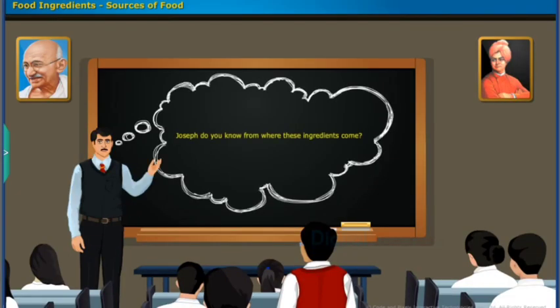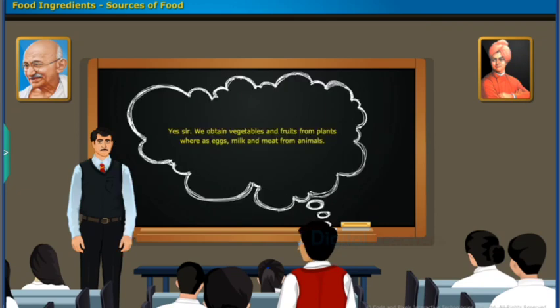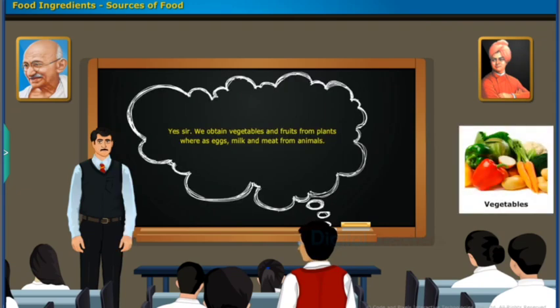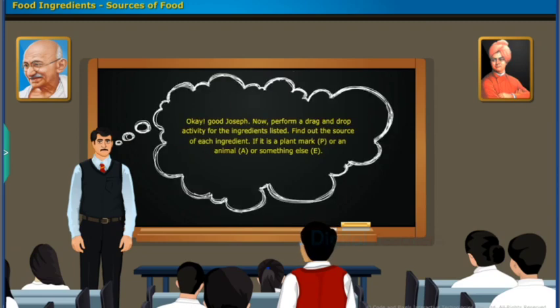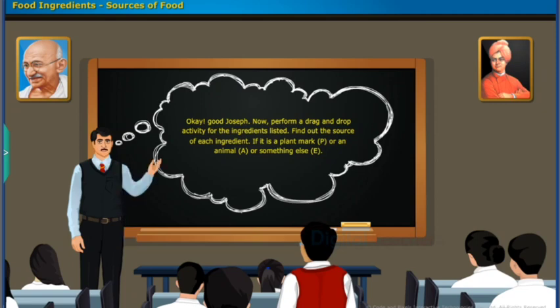Joseph, do you know from where these ingredients come? Yes sir, we obtain vegetables and fruits from plants, whereas eggs, milk and meat from animals. Okay, good Joseph. Now perform a drag and drop activity for the ingredients listed. Find out the source of each ingredient — if it is a plant, mark B; or an animal, mark A; or something else, mark E.